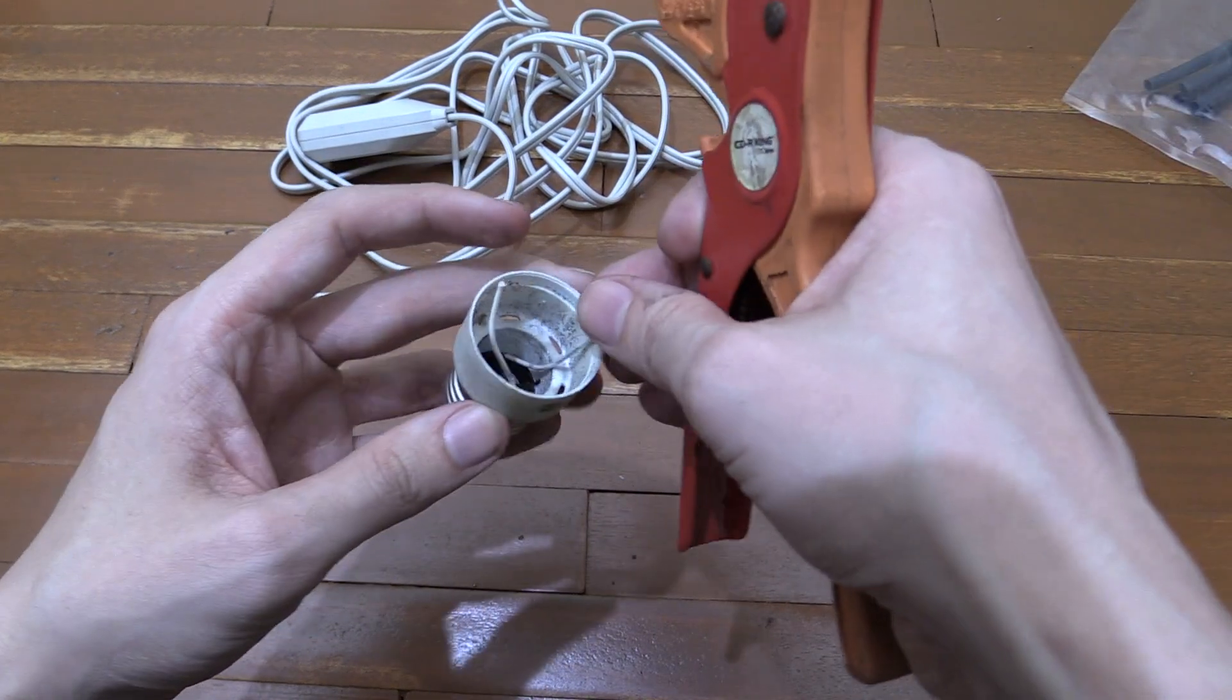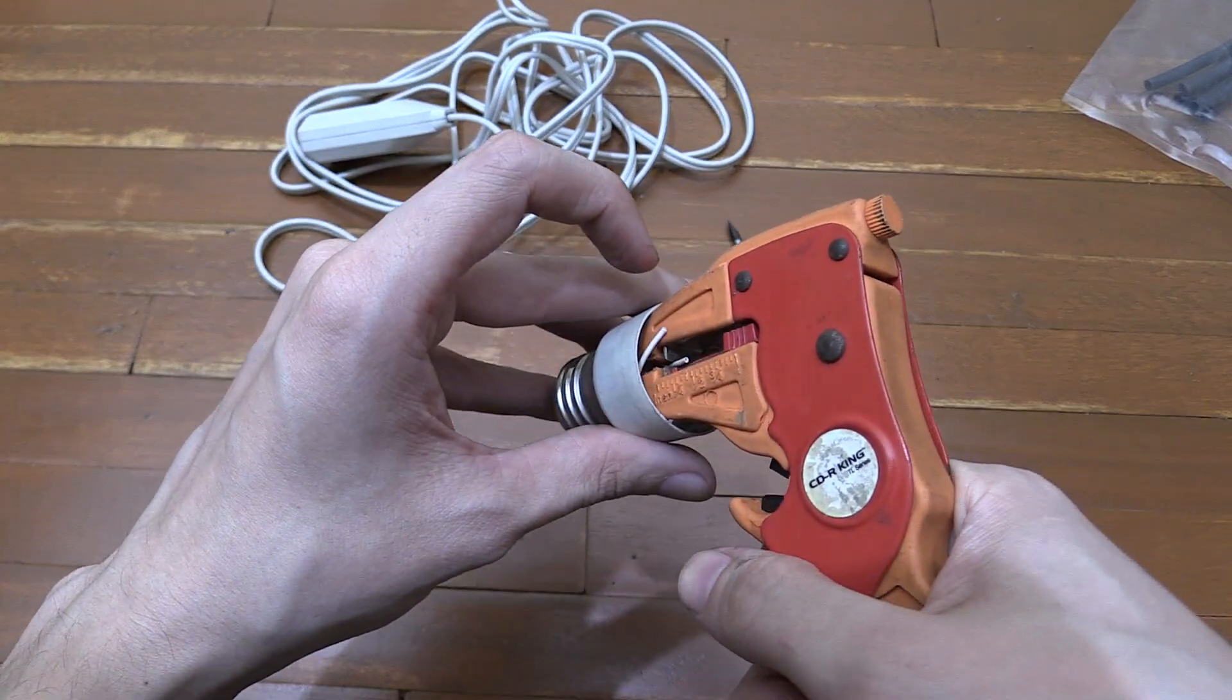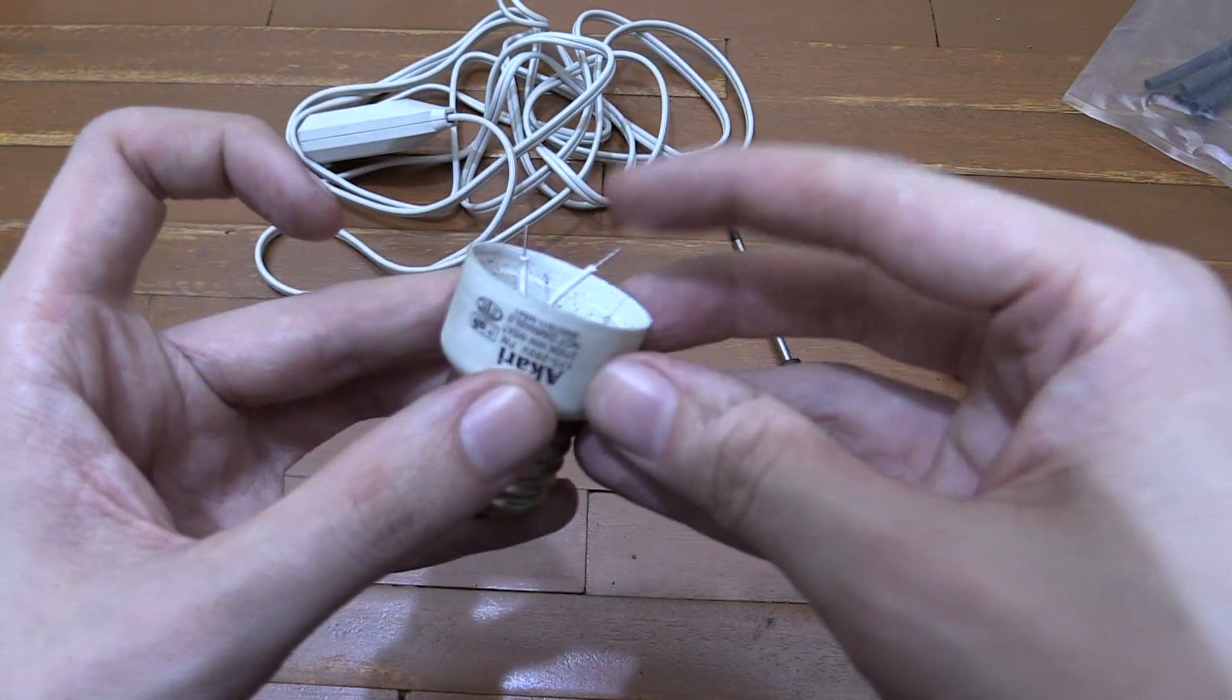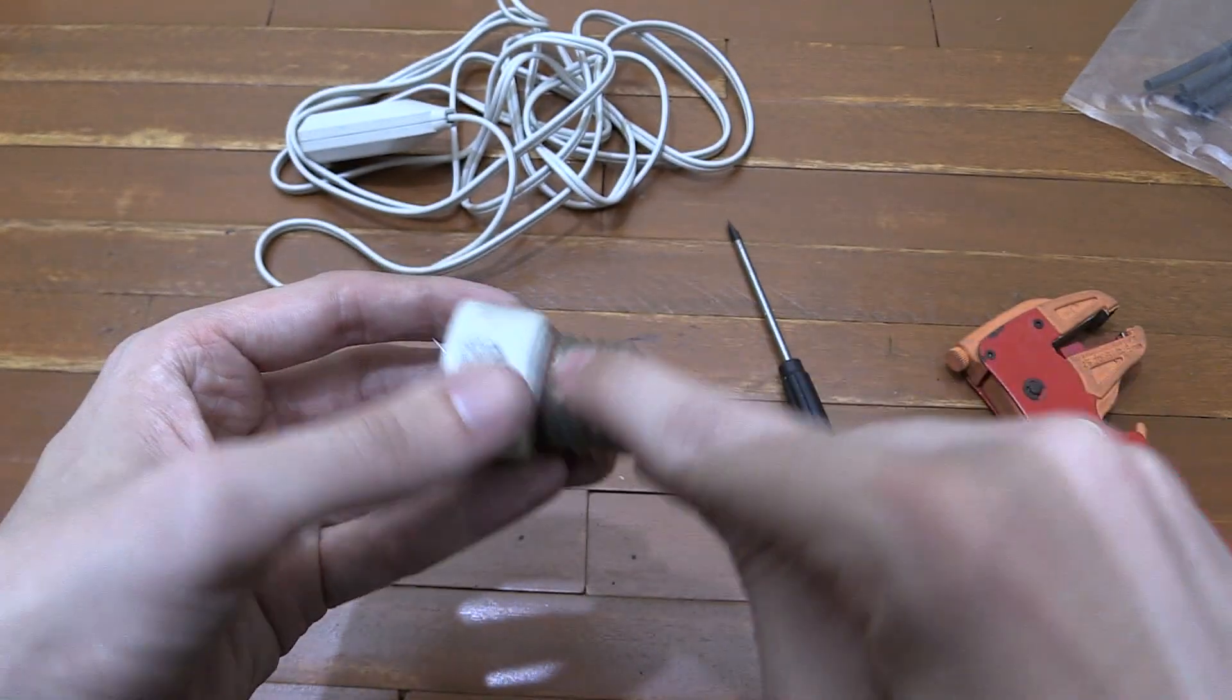So the next part is just to strip back the wires a little bit. This is a little bit awkward because these wires aren't very long. So now you can see we've got two bare connectors. One of them is going here and one of them is going to the outside.